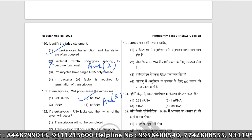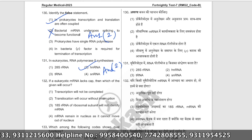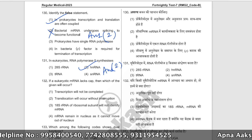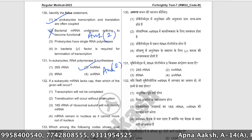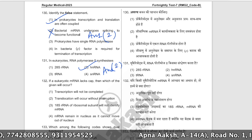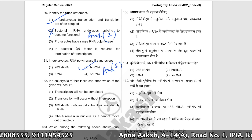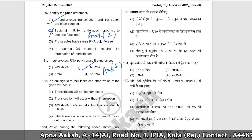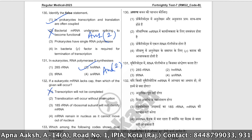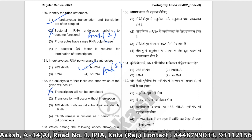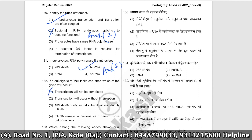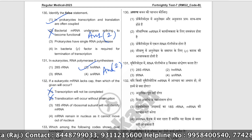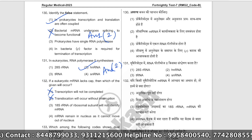If a eukaryotic mRNA lacks a 5' cap, which of the following will occur? Without the cap, the 18S rRNA of the small ribosomal subunit will not be able to identify and bind the mRNA, so translation initiation will be impaired. This is the correct consequence.